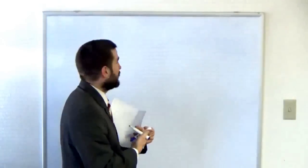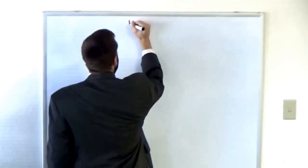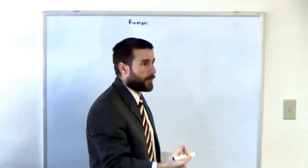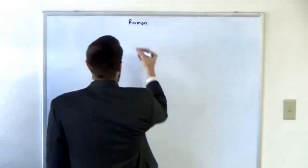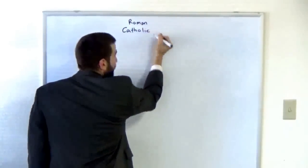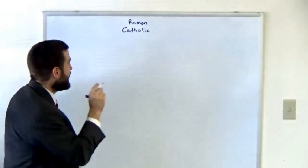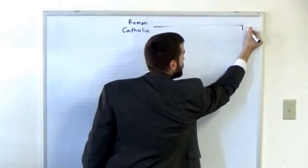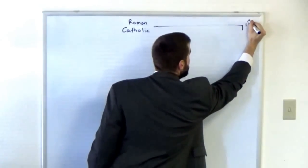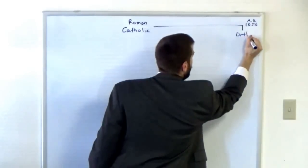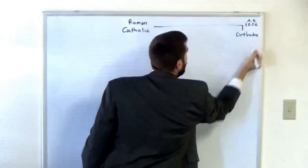Starting at the top with false Christianity, the number one apostate church throughout history would be Roman Catholic. In 1054 AD we have a split off, the Great Schism, and this is where your Orthodox comes from.